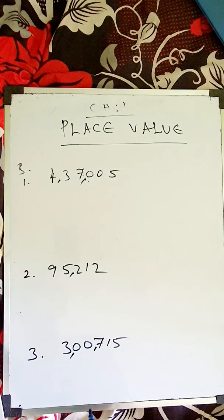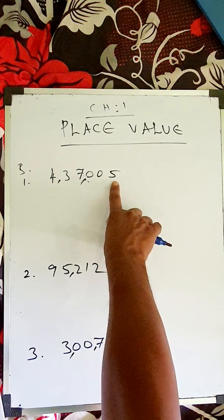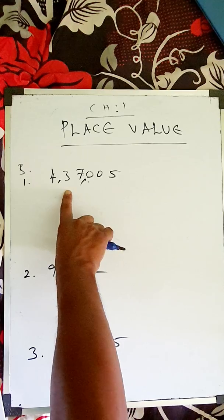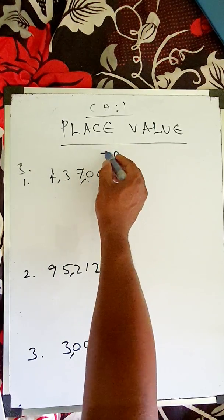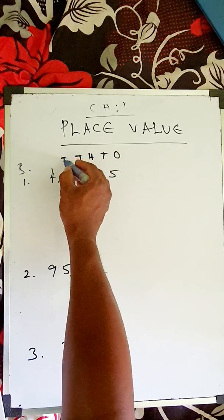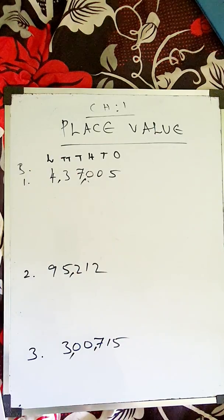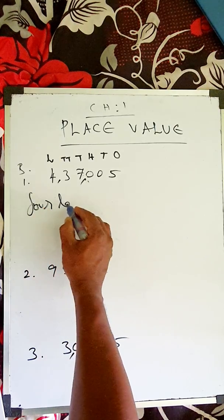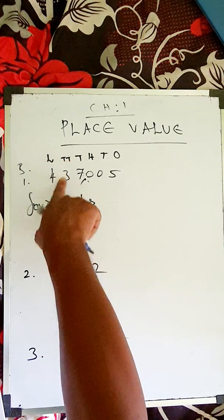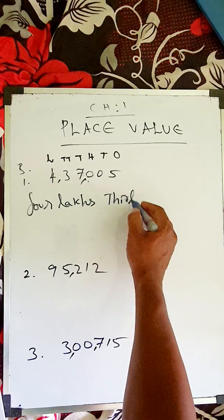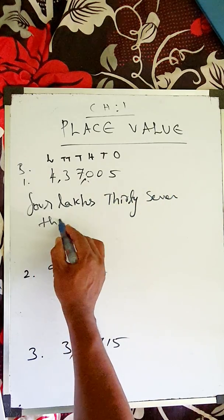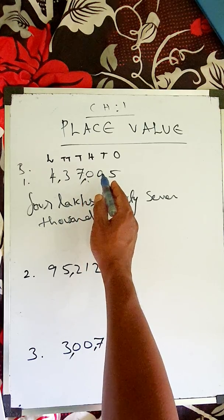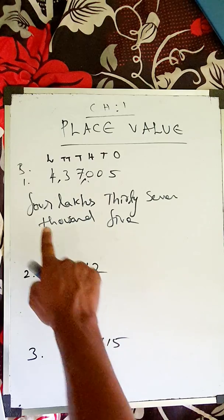Now write the number in words. The place values are: ones, tens, hundreds, thousands, ten thousands, and lakhs. So if lakhs is four, write 'four lakhs.' After that, ten thousands and thousands together give thirty-seven, so write 'thirty-seven thousand.' Hundreds and tens are nothing; only five is there, so write 'five.' Answer: four lakhs thirty-seven thousand five.